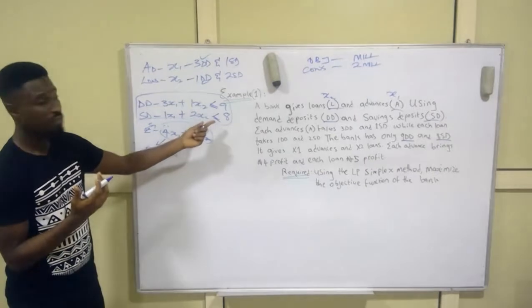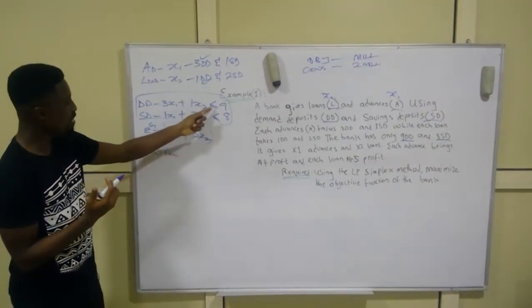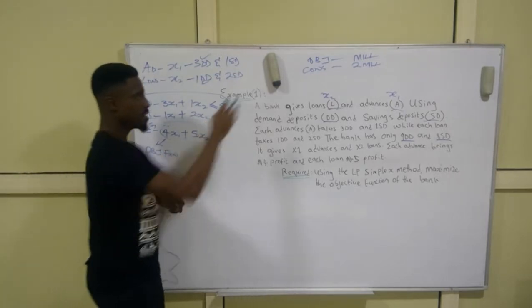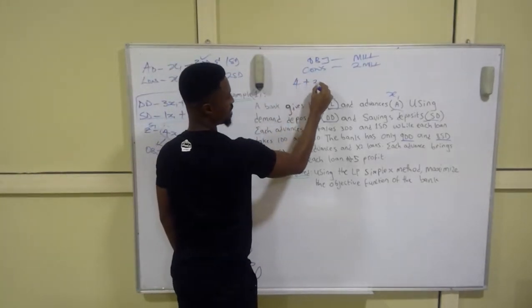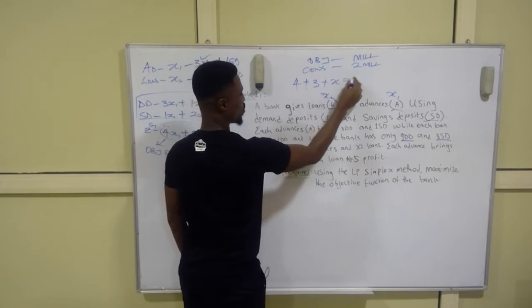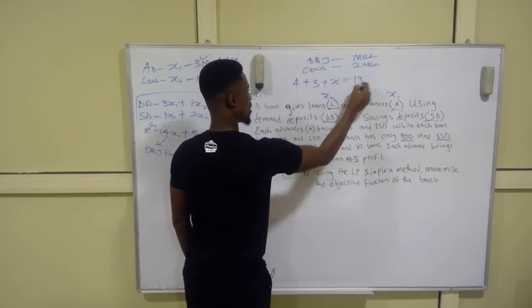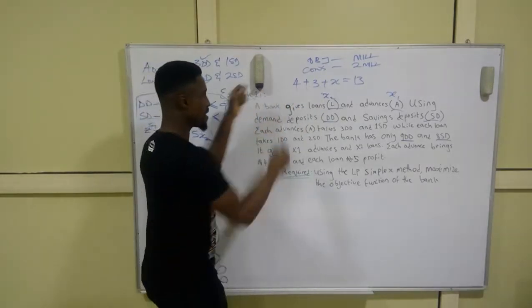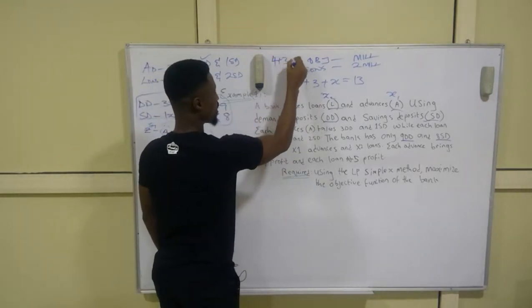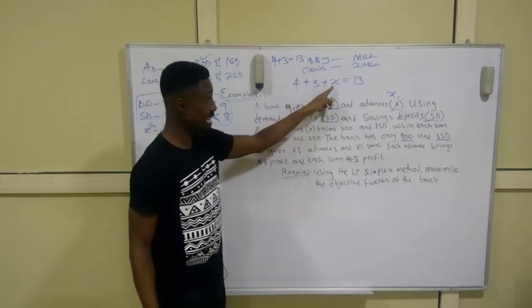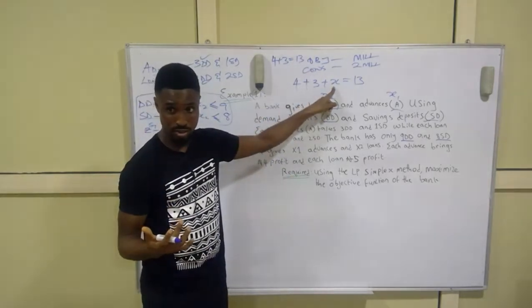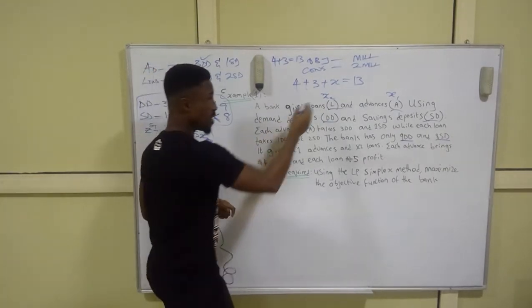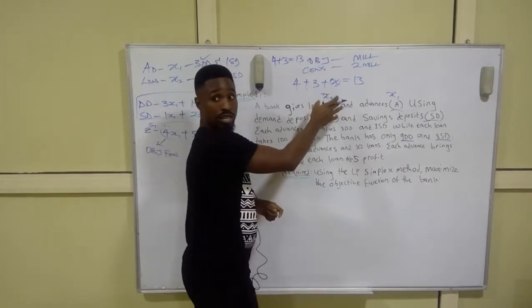Moving ahead, we now have to remove these inequalities. To do that, you add slack variables. For example, if you have 4 + 3 + x = 13, the x (slack) balances the equation to make it an equality sign. When we solve for x, it eventually gives us the value needed — in this case, 6.